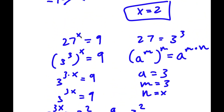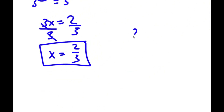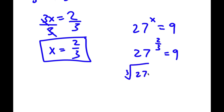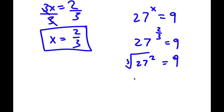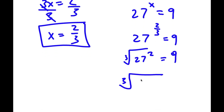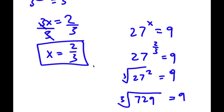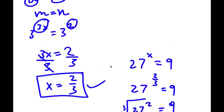Now to check, I'm going to plug x equals 2 over 3 into the equation 27 to the power of x equals 9. So I have 27 to the power of 2 over 3 is equal to 9. Now 27 to the power of 2 over 3 is the same thing as the cube root of 27 squared. 27 squared is 729, so I have the cube root of 729, which equals 9. So 9 equals 9, confirming our solution x equals 2 over 3 is correct.